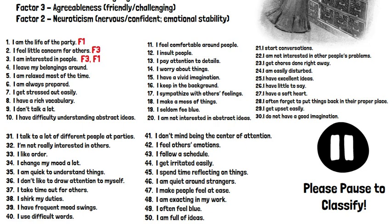Number three, 'I'm interested in people' — this is where I had a little bit of a struggle. I would probably put it in F3, agreeableness, since we'd need an interest to be friendly. But I could also see it going into Factor 1, which is extroversion — how outgoing we are; do we approach people and question them, do we want to find out who they are?